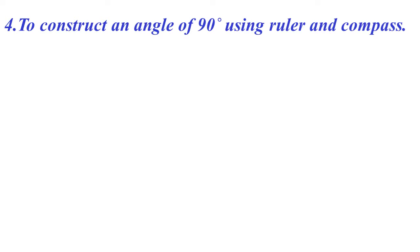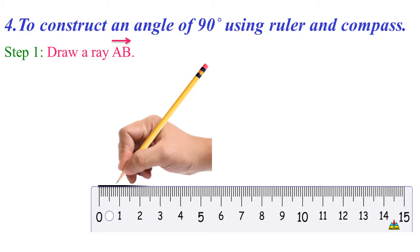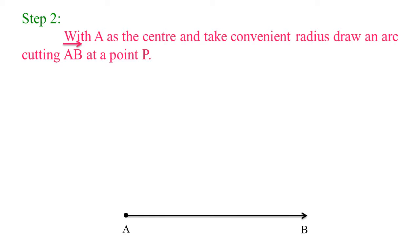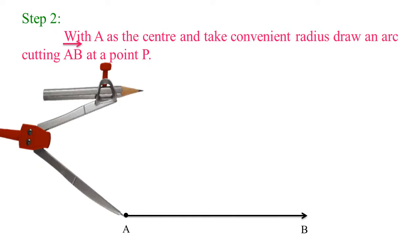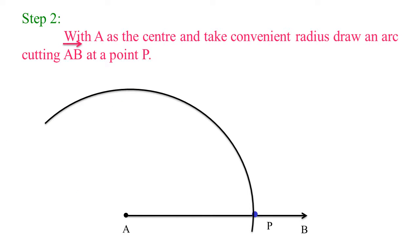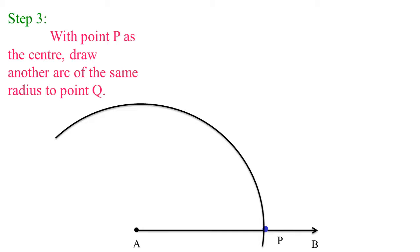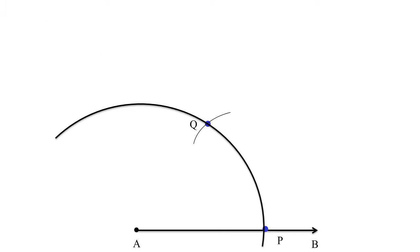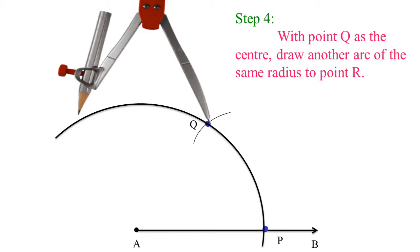Now let's see the fourth problem: To construct an angle of 90 degrees using a ruler and compass. Step 1: Draw a ray AB using a ruler. Step 2: With A as the center and take a convenient radius, draw an arc cutting ray AB at a point P. Step 3: With point P as the center, draw another arc of the same radius to point Q. Step 4: With point Q as the center, draw another arc of the same radius to point R.